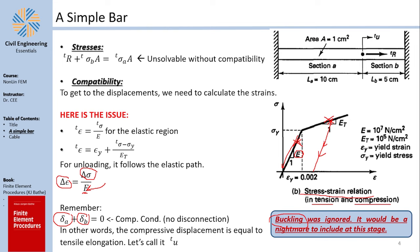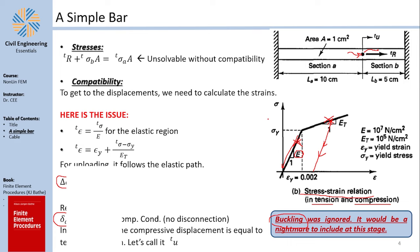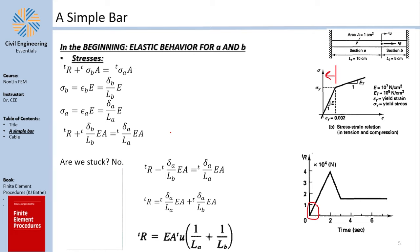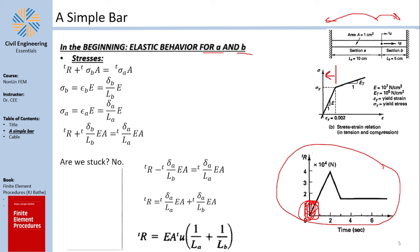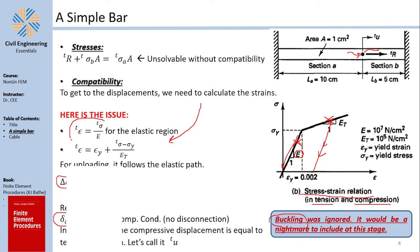The compatibility equation means delta_A plus delta_B equals zero: if B shrinks by negative two, then A should extend by two. Now, if the load values are small, they are not enough to make any section yield, meaning both section A and B behave elastically. In that case it is easy: epsilon equals sigma over E.